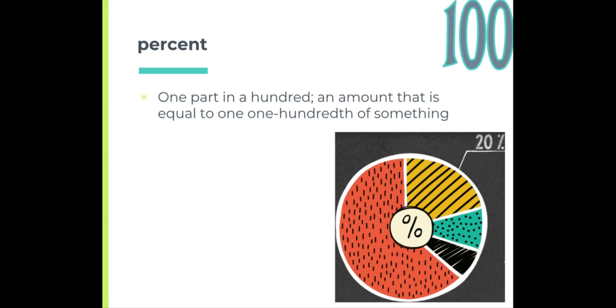Percent. This is one part in a hundred, an amount that is equal to one one hundredth of something. So you may get 100% on a test. That means you got a hundred out of one hundred. If you get ninety percent, it means you got ninety out of one hundred.